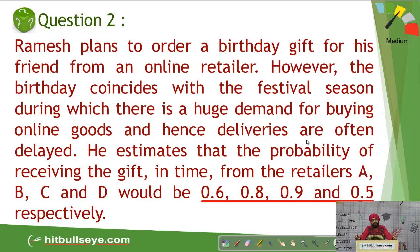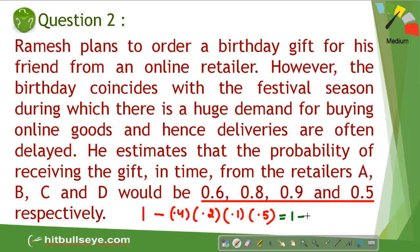When would his friend receive the gift in time? If at least one of those delivers this on time. So the friend will receive the gift if at least one delivers. That probability can be found. Total probability is equal to 1 minus the probability that none of them delivers it on time. So, delivering a is 0.6, so not delivering is 0.4, 0.2, 0.1 and 0.5.